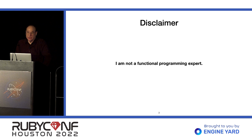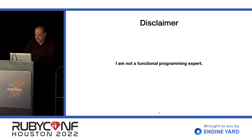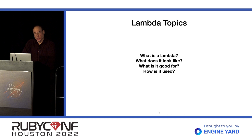I'm not a functional programming expert. I've just dabbled a little bit in Elixir, Clojure, and Erlang a few years ago. I just did some superficial study and really liked it and tried to bring some of the concepts to my Ruby programming. We'll be talking about Lambdas, obviously — what is a Lambda, what does it look like, what is it good for, and how is it used?